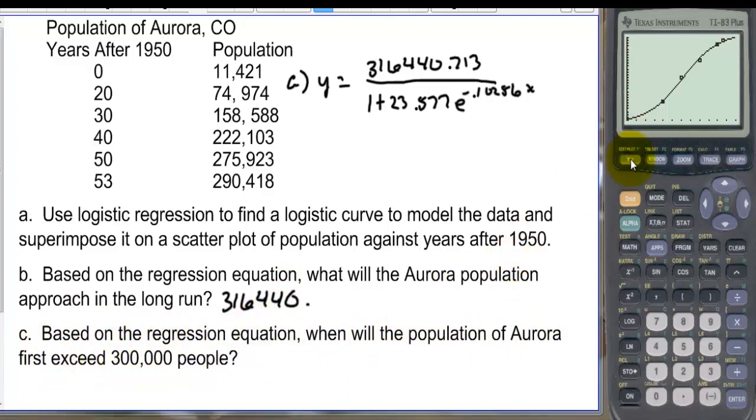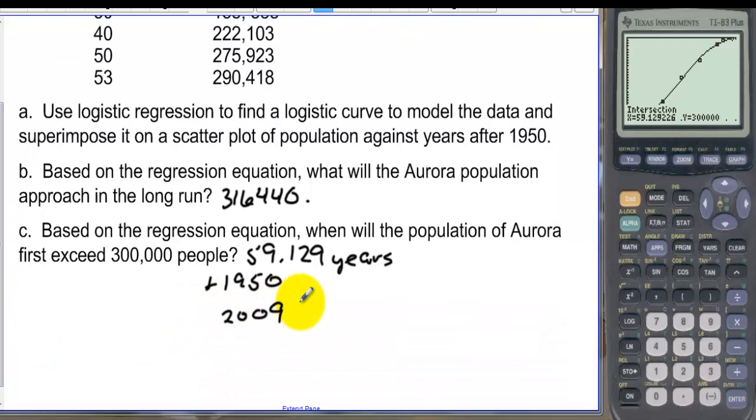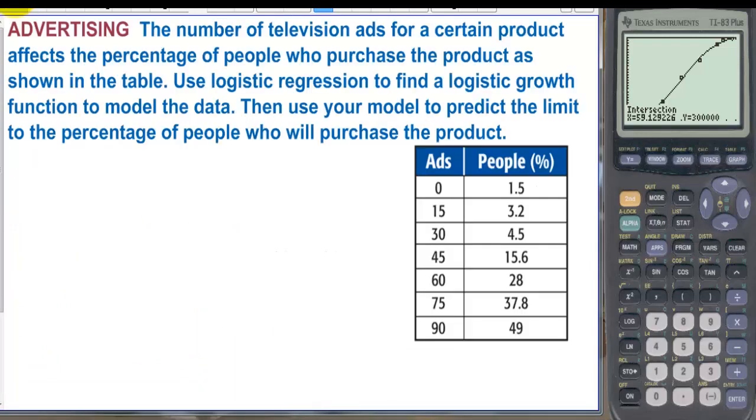Based on the regression equation when will the population of Aurora first exceed 300,000 people. Let's go to y equals let's set y2 equal to 300,000 and then we can find the intersections of these two graphs right here. So we have we can go second calculate we want intersection and we have first curve second curve and we need to make a guess so I'm going to right click over to where it looks like they're intersecting and press enter. So 59.129, 59.129 that's going to be years and if we add that to 1950 then we have in the year 2009.